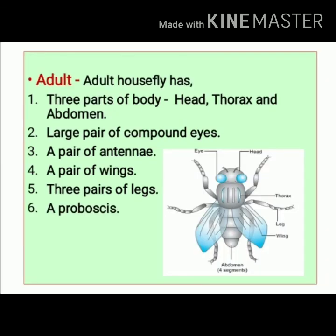The last stage is the adult stage. The adult house fly has three body parts: head, thorax, and abdomen. It has a pair of large compound eyes, a pair of antennae, a pair of wings, three pairs of legs, and a proboscis.